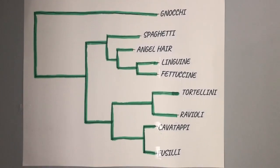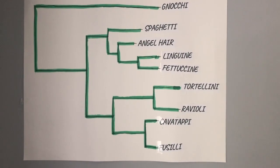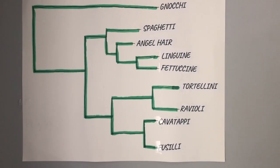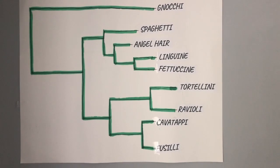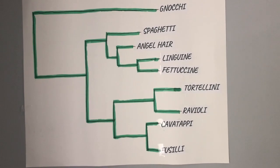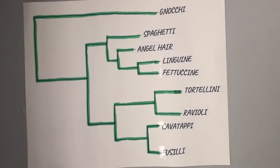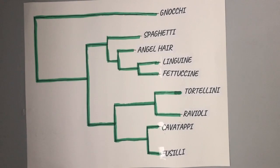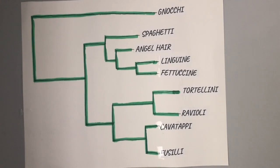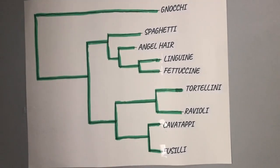Here we have our phylogenetic pasta tree. We are looking at the similarity of OTUs, which are operational taxonomic units. OTUs can be many different things like different species, strains of a virus, or different alleles. In this case, it will be different types of pasta.